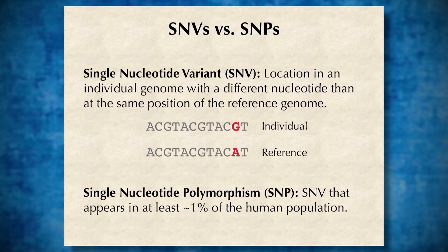A single nucleotide polymorphism, or SNP, is basically just an SNV that appears in a high enough frequency in the population. Typically, people use 1% of the human population as a good threshold.